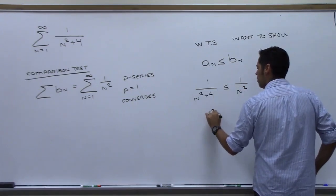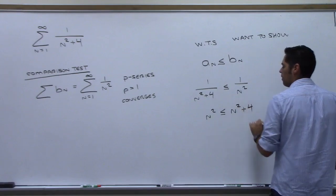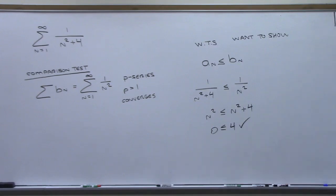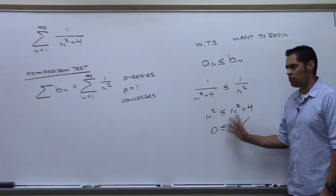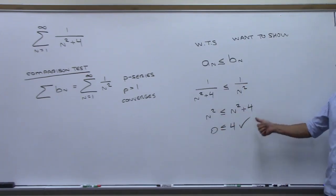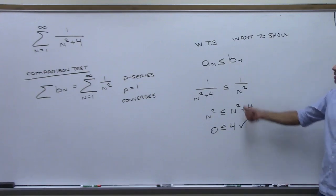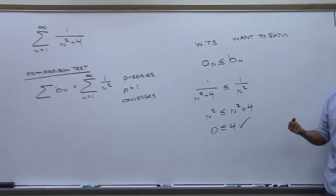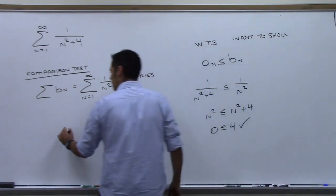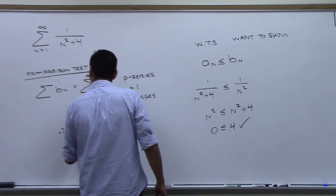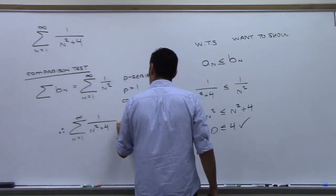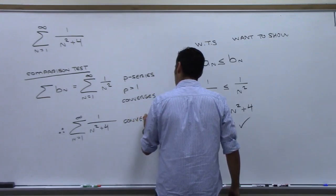Move things around, subtract n squared, and get to a statement that makes sense. Is that a true statement? Yes. If that's true, that means the inequality is true. If that's true, the test is going to work. Therefore, the sum from n=1 to infinity of 1 over (n² + 4) does whatever the other one did.